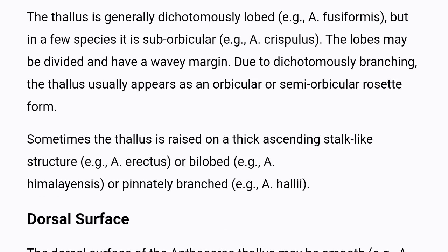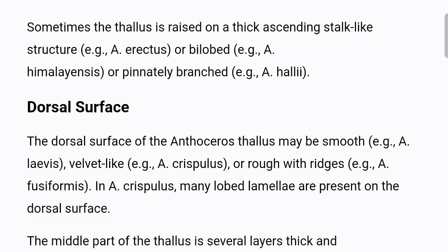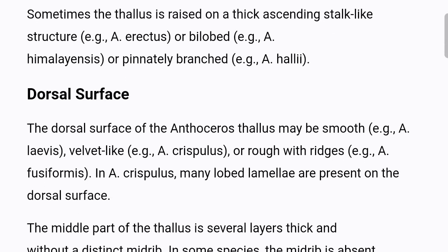The lobes may be divided and have a wavy margin. Due to dichotomous branching, the thallus usually appears as an orbicular or semi-orbicular rosette form. Sometimes the thallus is raised on a thick ascending stalk-like structure, e.g. Anthoceros erectus, or bi-lobed, e.g. Anthoceros himalayensis, or pinnately branched, e.g. Anthoceros halii.